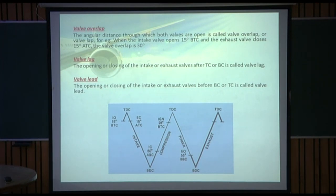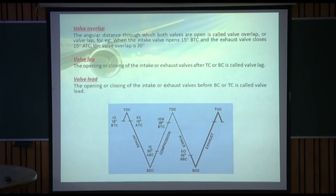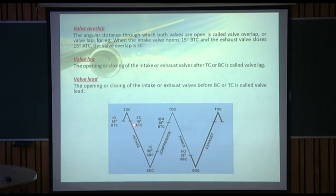This is the valve timing diagram, showing where the intake valve opens and closes for the intake stroke, and where the exhaust valve opens and closes. There is a term called valve overlap: the angular distance through which both valves are open is called valve overlap or valve lap. For example, when the intake valve opens 15 degrees before top center and the exhaust valve closes 15 degrees after top center, both valves are open for 30 degrees — this is called valve overlap.